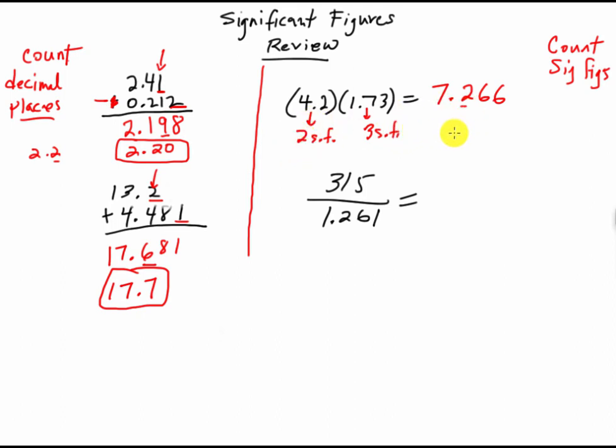So 1, 2 is where I'm going to round, so my final answer comes out to 7.3. And there you go. I'm just counting significant figures here.